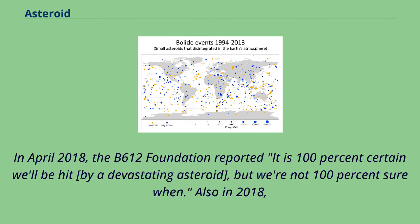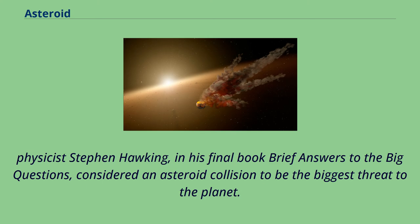In April 2018, the B612 Foundation reported it is 100% certain Earth will be hit by a devastating asteroid, but we're not 100% sure when. Also in 2018, physicist Stephen Hawking, in his final book Brief Answers to the Big Questions, considered an asteroid collision to be the biggest threat to the planet.